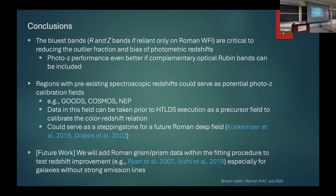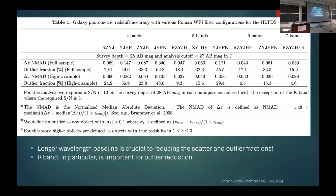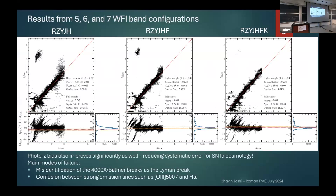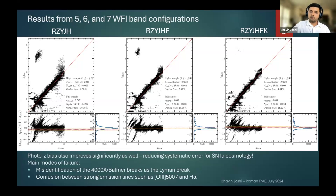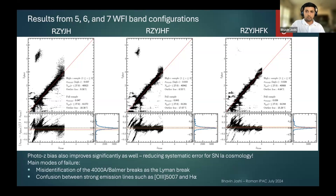Question from Yicheng at University of Missouri: You mentioned that the blue bands R and Z are important for photo-z — is this true for all redshifts or only for some range? You combined all redshift ranges in your statistics. Response: Once the 4000 angstrom break shifts into the R band, you can do much better, but below those redshifts you'll struggle. I did combine everything when computing outlier fractions, but you're right that within certain redshift ranges — for example, redshifts 2 to 3 or 1 to 2 in some cases — the performance is much better.